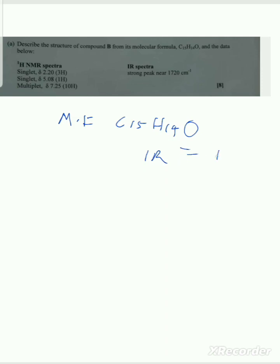Looking at the data we have been given — NMR and IR spectra — remember IR spectra is a technique that helps us identify the functional group. So please watch the previous video before this one. From the IR spectra, we have a value near 1720 cm⁻¹, which indicates a carbonyl-containing compound.